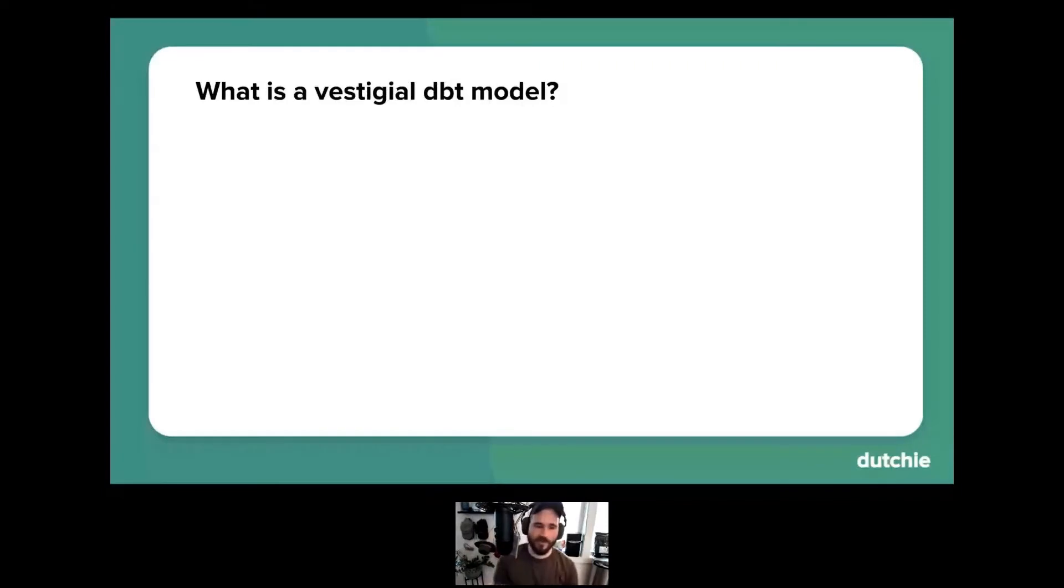So the big question, how do we identify a vestigial DBT model? Well, it turns out in our case, it was relatively simple. The overwhelming majority of downstream DBT model usage for us was in the form of mode analytics reports. So for us, it was pretty reasonable for us to say, if a DBT model wasn't currently being used in any mode report, then it effectively could be considered vestigial. But then the question becomes, how do we connect DBT models to mode reports? Well, the first thing we did was we created a DAG of mode analytics resources.